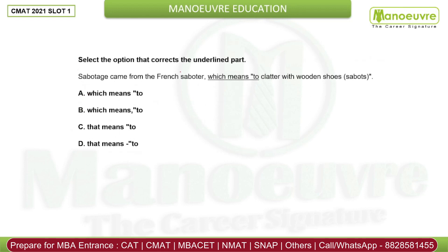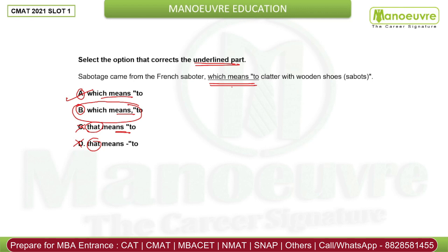Select the option that corrects the underlined part — 'which means.' Now looking at the options: option A has no comma; option B has a comma; option C also has no comma; option D has 'that.' Options with 'that' are eliminated first. Between A and B, the presence of a comma matters — without a comma is incorrect, so option B with the comma is the right form. Option B will not be your answer; the answer is the one with the comma and correct structure.